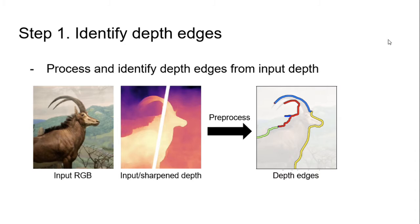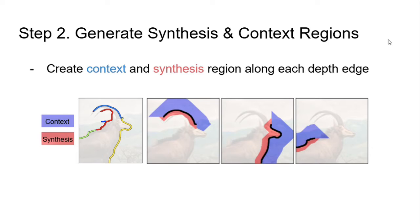Given a single RGBD image as input, we first identify the depth edges. Next, for each detected depth edge, we generate a context and a synthesis region.